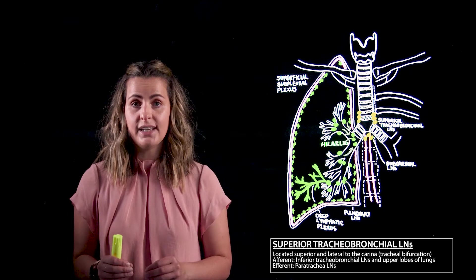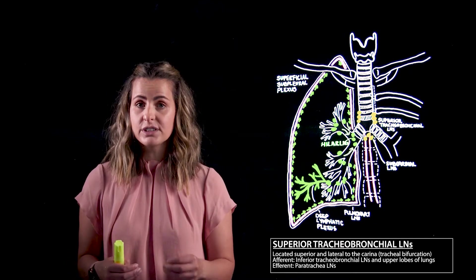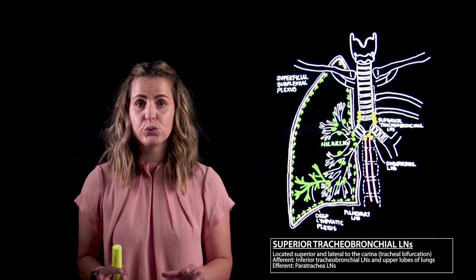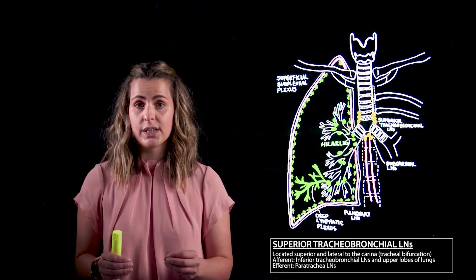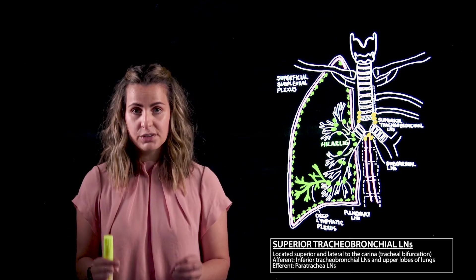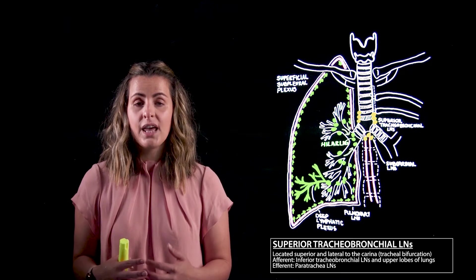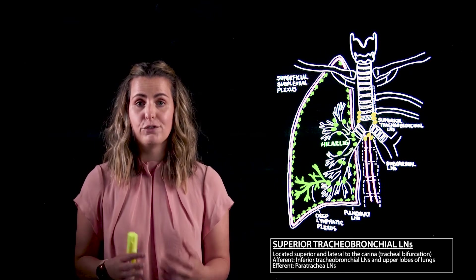From here all lymph will drain superiorly into the paratracheal lymph nodes whose efferent vessels will then unite with the parasternal and anterior mediastinal nodes, which we'll talk about in a minute, to form a major trunk that is of the utmost importance: the bronchomediastinal trunk. This is located along the course of the brachiocephalic vein for your reference.